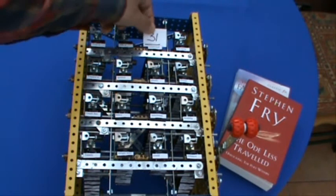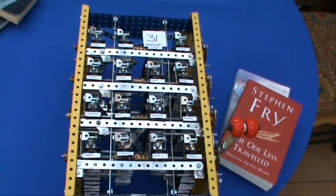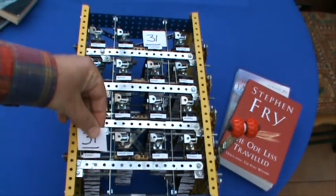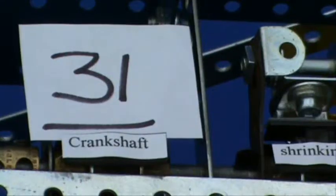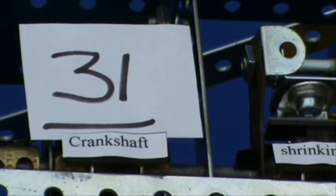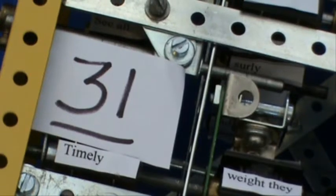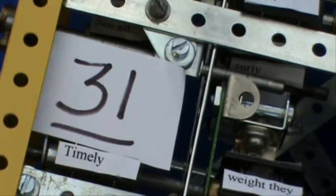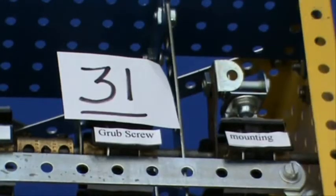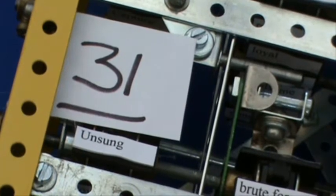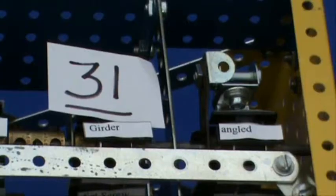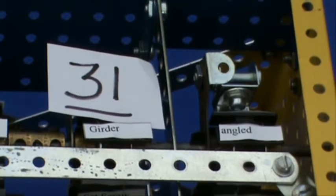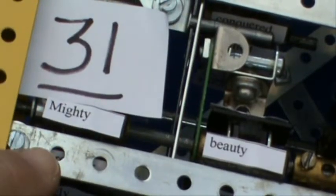31 part names mentioned in line 1 correspond with another 31 words in line 4. Crankshaft with timely, grub screw is unsung, girder is mighty.